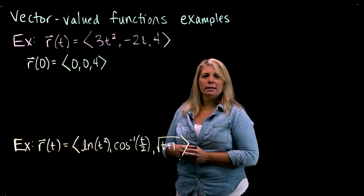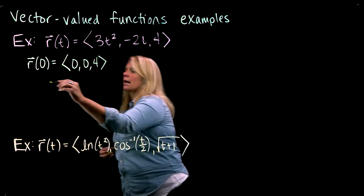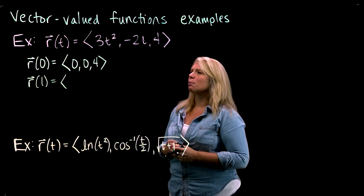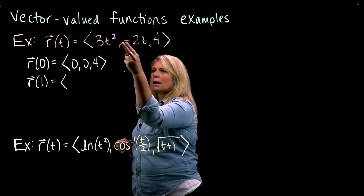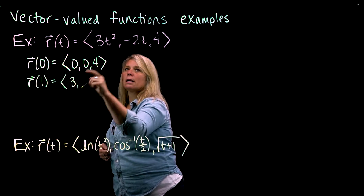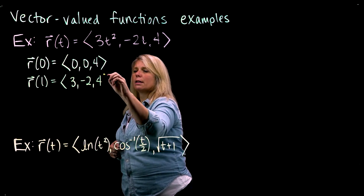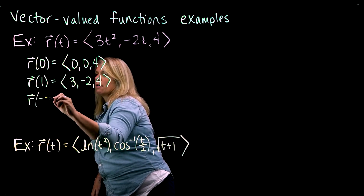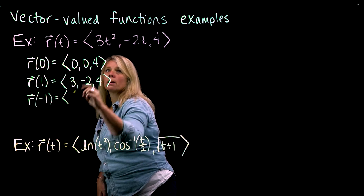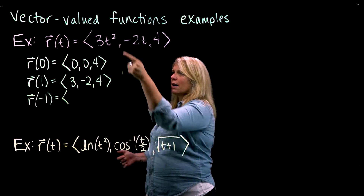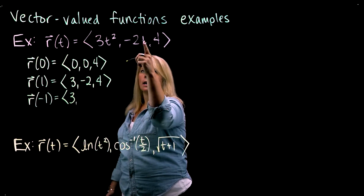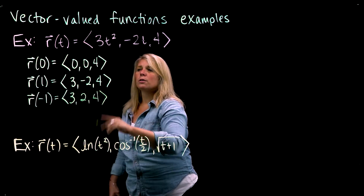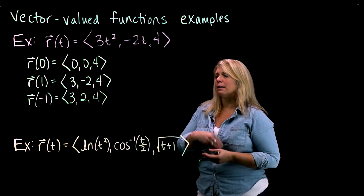Let's also try some positive and negative values of t to get a sense of whether those behave differently. For t equals 1: 3 times 1 squared is 3, negative 2 times 1 is negative 2, and the third component is always 4. For r of negative 1: squaring negative 1 gives positive 1 times 3, which is 3, and negative 2 times negative 1 is positive 2, and 4.